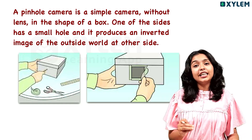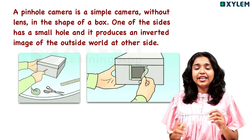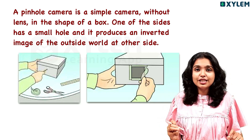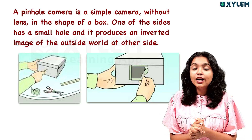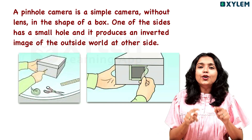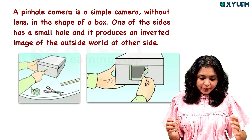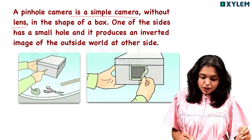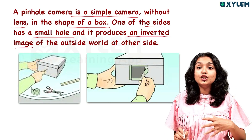We will create a small hole in a box. This is a simple camera — we do not use a lens. It is in the shape of a box, and one of the sides has a small hole. It will produce an inverted image of the outside world.